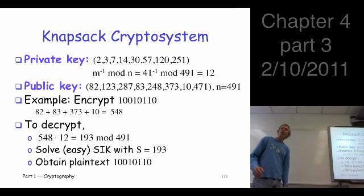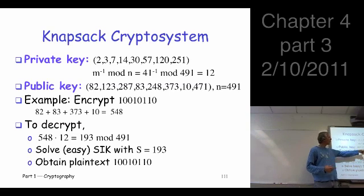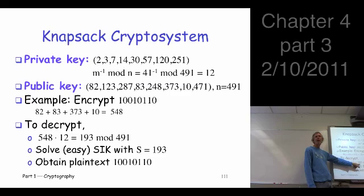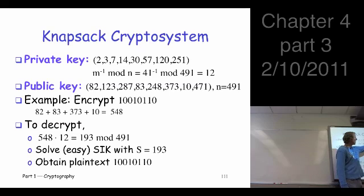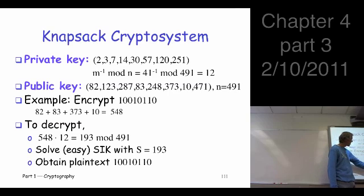All right, now how do we decrypt? If we have the private key, I claim we can decrypt really easily here. We take this guy, we multiply it by this magic number 12, take the result mod 491, we get something, 193. Now solve the super-increasing knapsack, which is also part of the private key, using 193. And what do we get? Is this guy in there? No? So that's a zero. Is this guy in there? Has to be. That's a one. What's left? We're left with 73. So this guy's in there? Yeah.